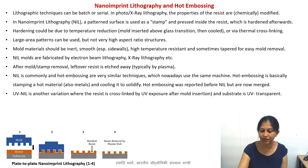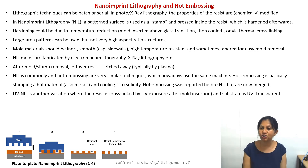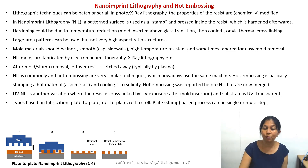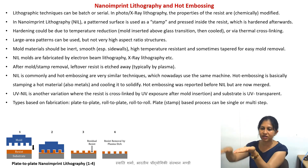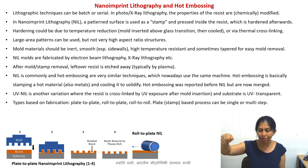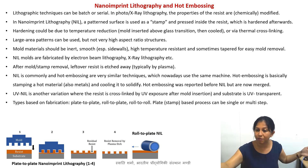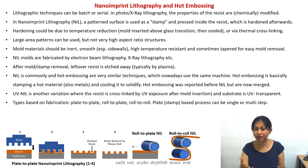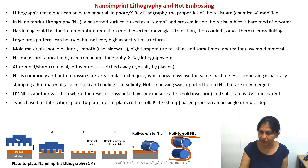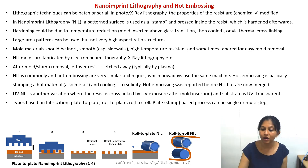For UV nano imprint lithography, the substrate must be transparent to UV light, since the light is typically shone from the bottom while the mold is typically opaque. There are also variations based on mold geometry: plate-to-plate (as shown in steps one to four), where both substrate and mold are flat plates; roll-to-plate, where the mold is a roll that rolls over the substrate enabling very large area patterning; and roll-to-roll, where two rolls are used with the substrate in between, enabling continuous patterning of flexible substrates.